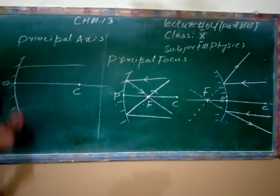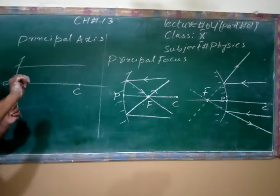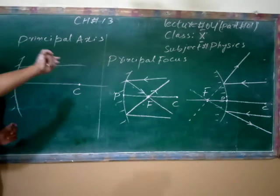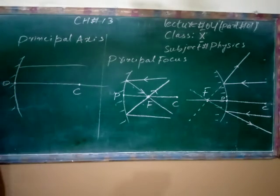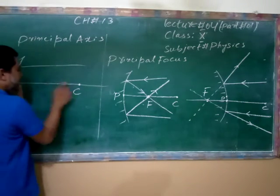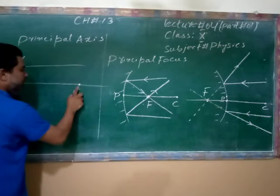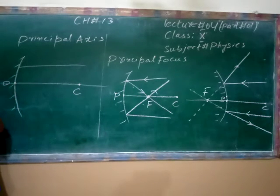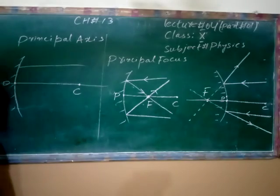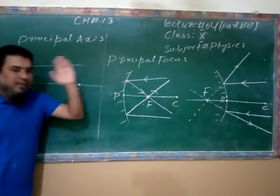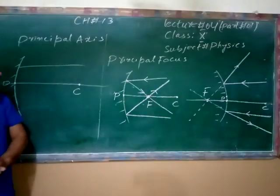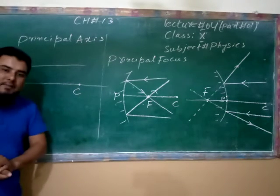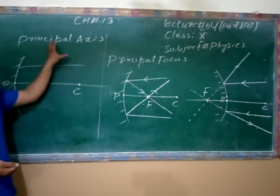The line passing through the pole of the mirror and the center of curvature is called the principal axis. You can extend this line beyond the center of curvature, and you can also extend this line behind the mirror in both directions.